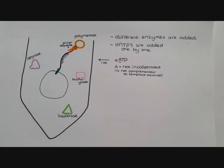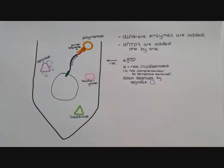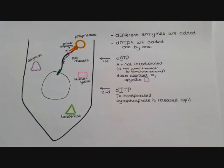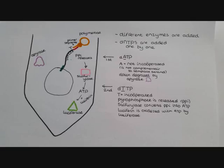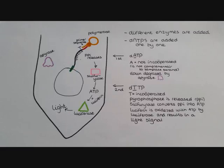As an example, adenine D-ATPs are down-degraded by apyrase when the adenine is not incorporated into the DNA. When incorporated into the DNA, the pyrophosphate is released. The pyrophosphate is converted into ATP by sulfurylase. The luciferin is oxidized by luciferase using the ATP. This generates a light signal recorded as a peak.